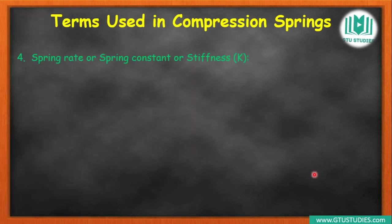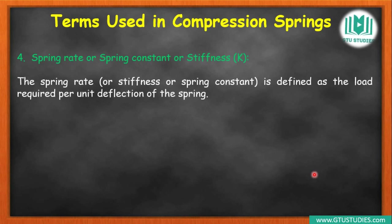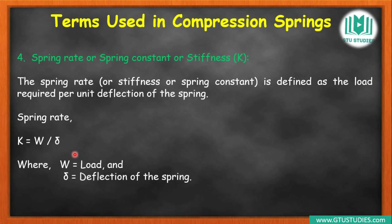The fourth term is spring rate, or spring constant, or stiffness — this is the main property of a spring. Stiffness is the load required per unit deflection. If load is W and deflection is delta, then stiffness K = W / delta, where W is the load and delta is the deflection. If 1 mm deflection requires a certain load, that is the stiffness.